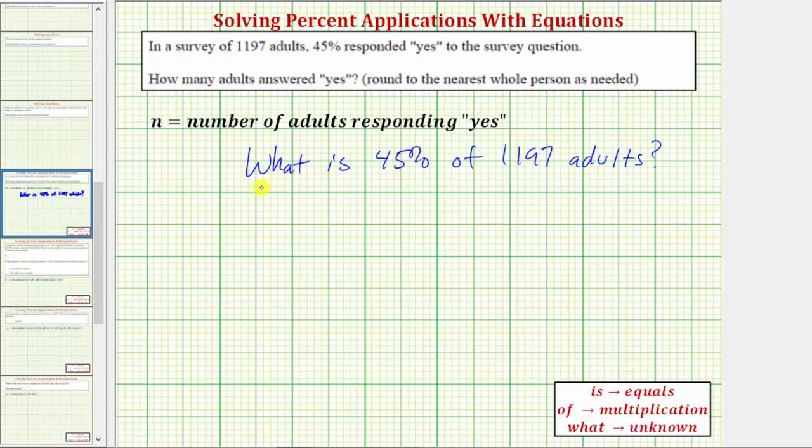Looking at the question again, for the word 'what', we have the unknown, which is the variable n. 'Is' means equals.